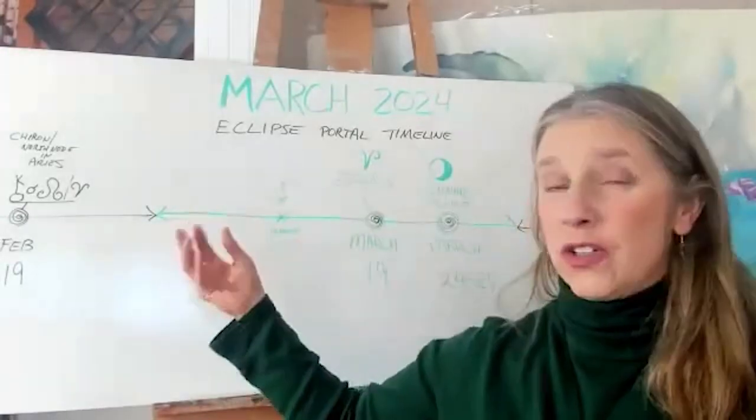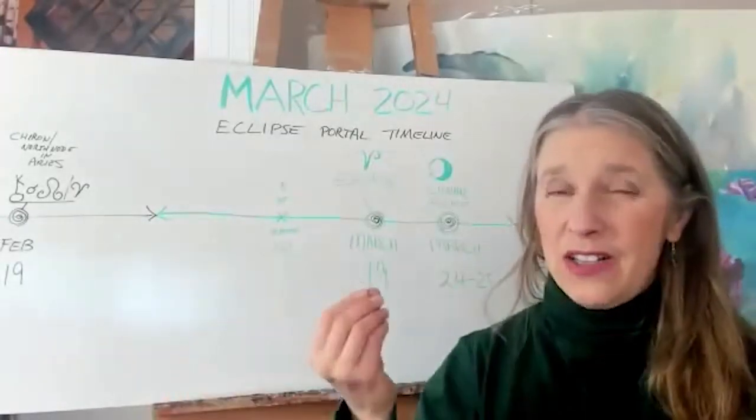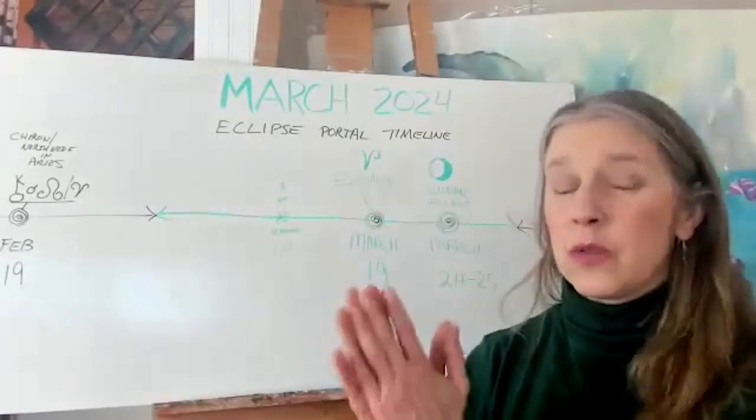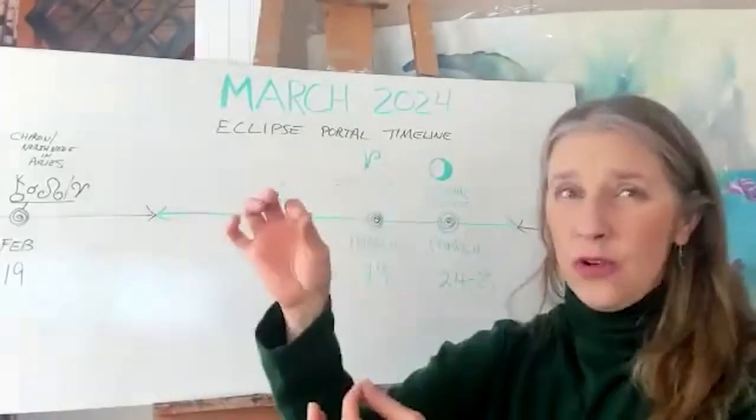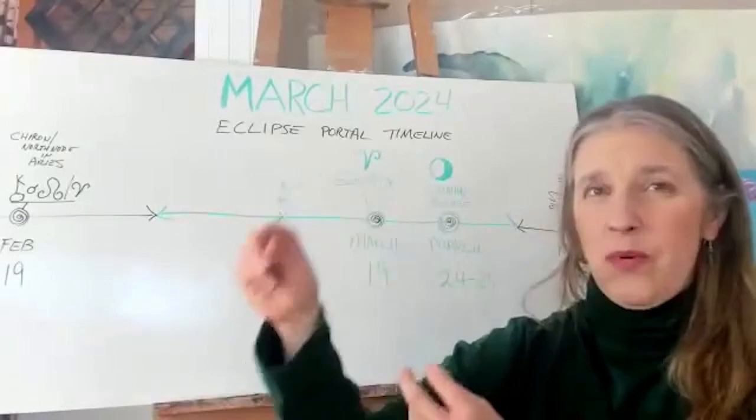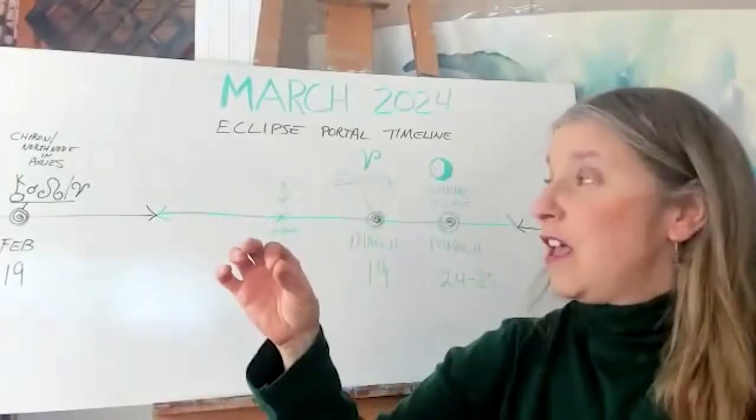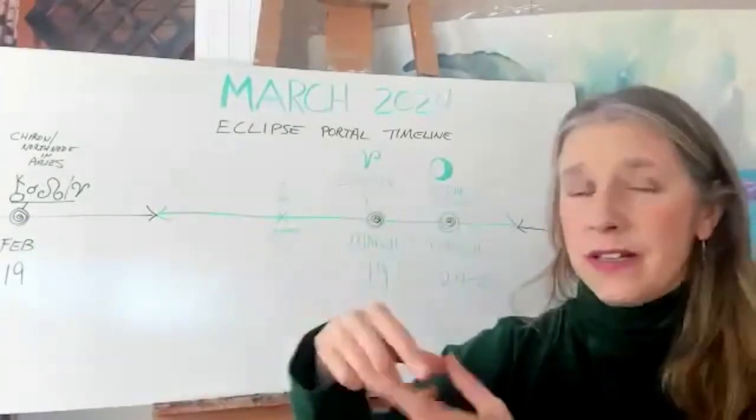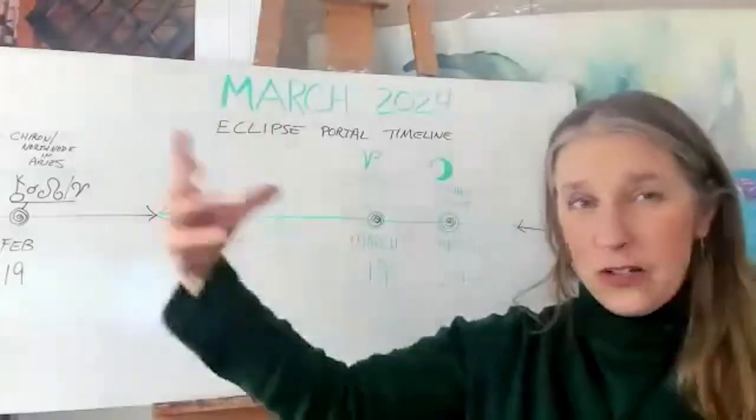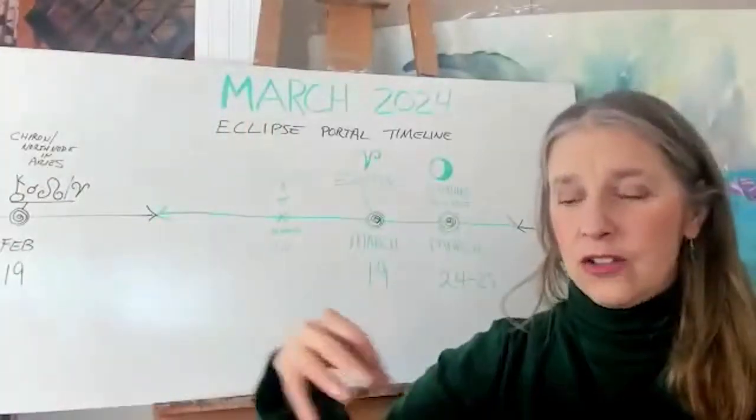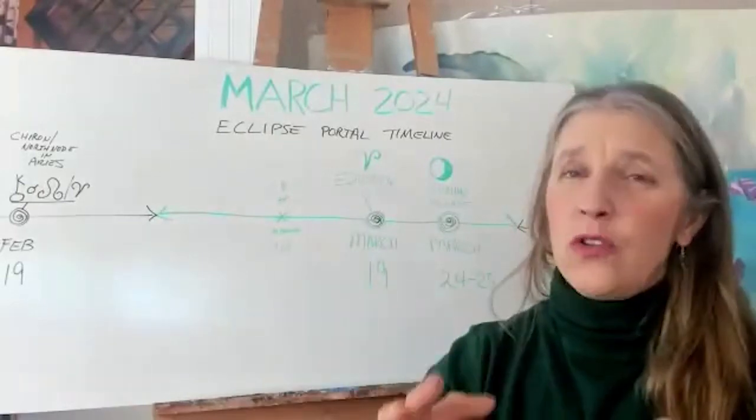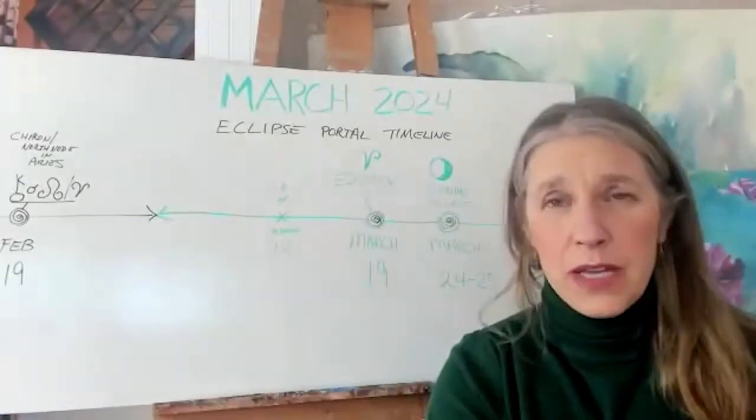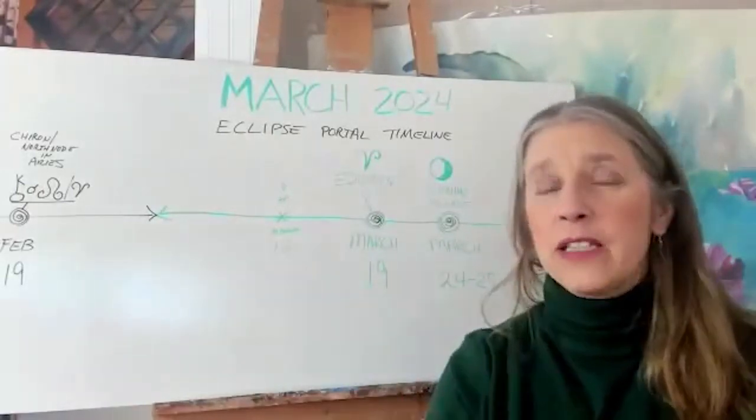When it's conjunct the north node that is a super powerful conjunction because what the north node is, there's two nodes of the moon and they represent the line of fate or destiny. The south node represents our past, where we've been, our karma coming up from the past.